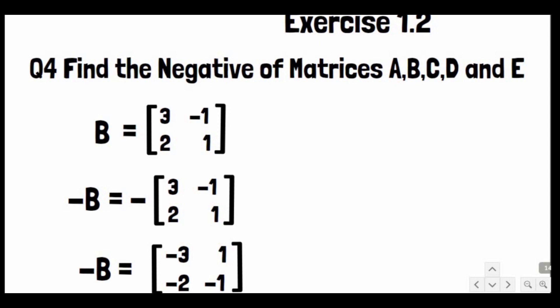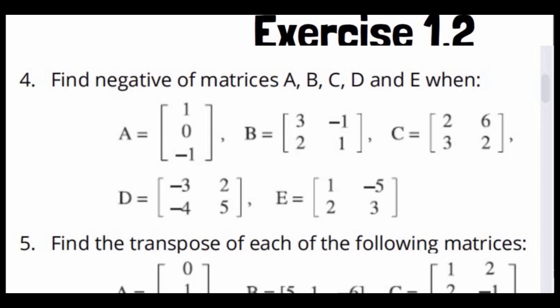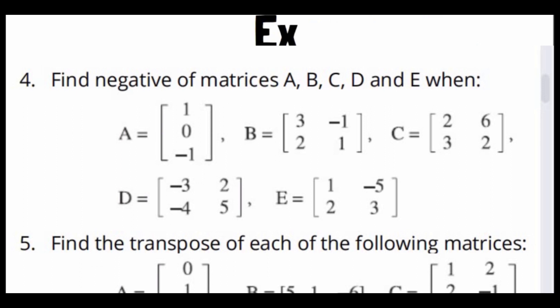So minus B (the negative matrix of B) is [-3, 1; -2, -1].